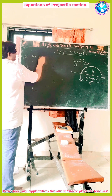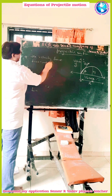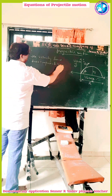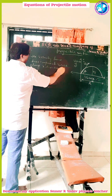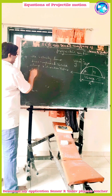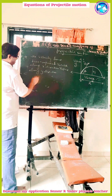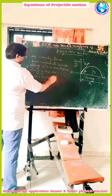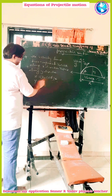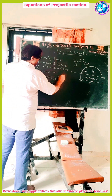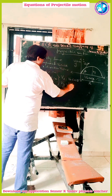The velocity has two components: v0 cos theta along the x-axis and v0 sin theta along the y-direction. Therefore, the distance traveled in x is equal to v0 cos theta times t. Similarly, the velocity components are vx = v0 cos theta and vy = v0 sin theta.